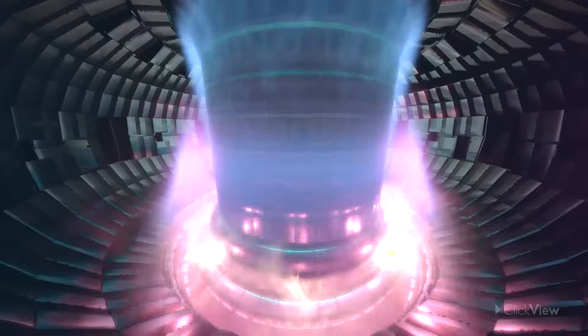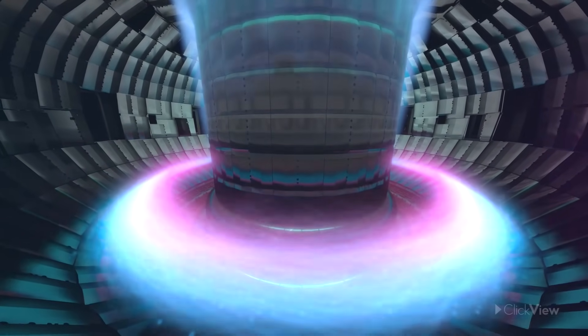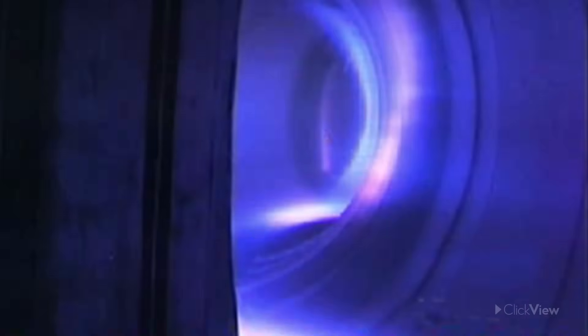Plasma isn't exactly easy to control. Not only does it squirm like a ring of jelly, but its super hot charged particles will quickly cool once they touch any surface. To keep the plasma hovering in place, two types of reactor use magnetic fields.